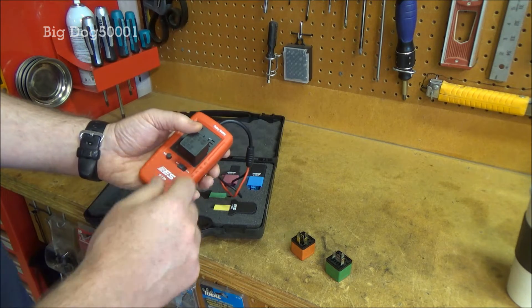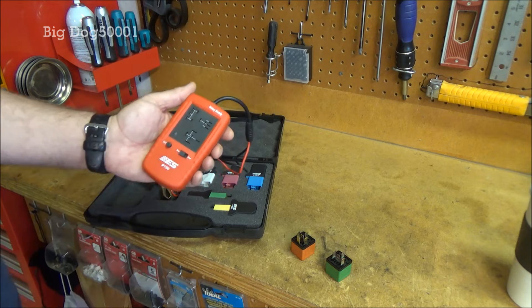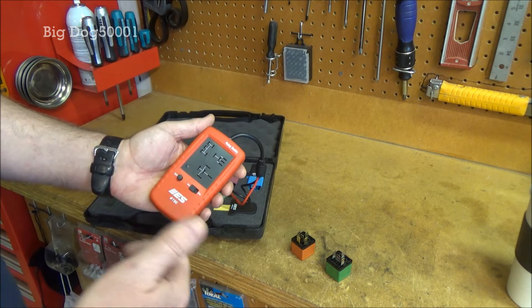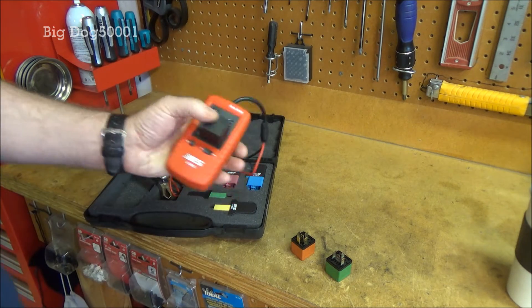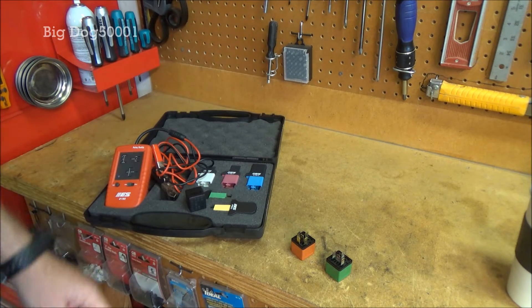It tests it ten times—turns it on and off ten times. If it's bad on any of those ten, it'll give you a red light. If all ten are good, it'll give you a green light. So it's pretty fast and easy, as long as the relays fit in one of your adapters. Let's go check it out on the vehicle.